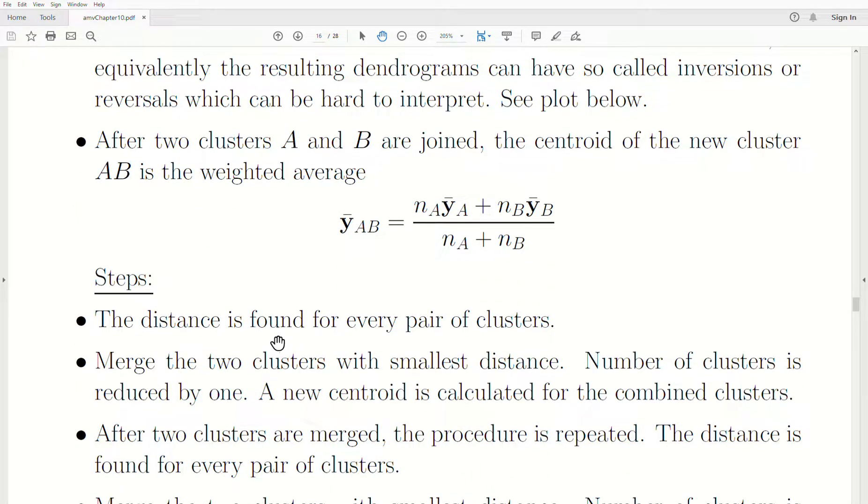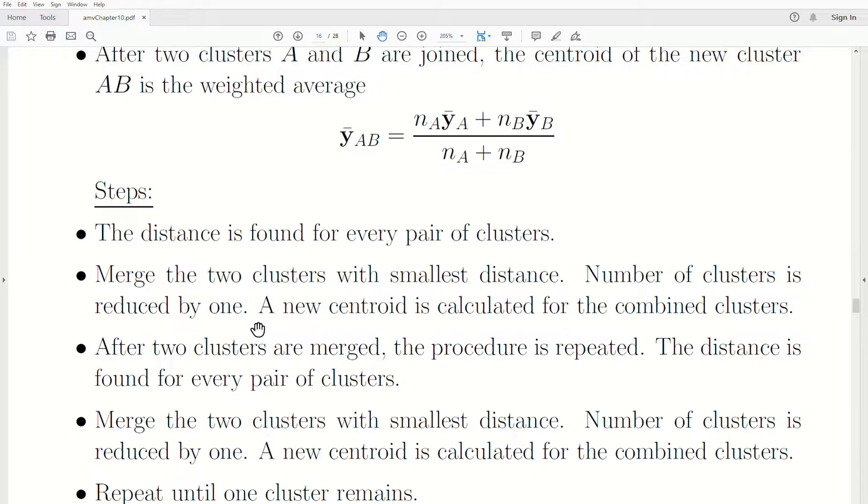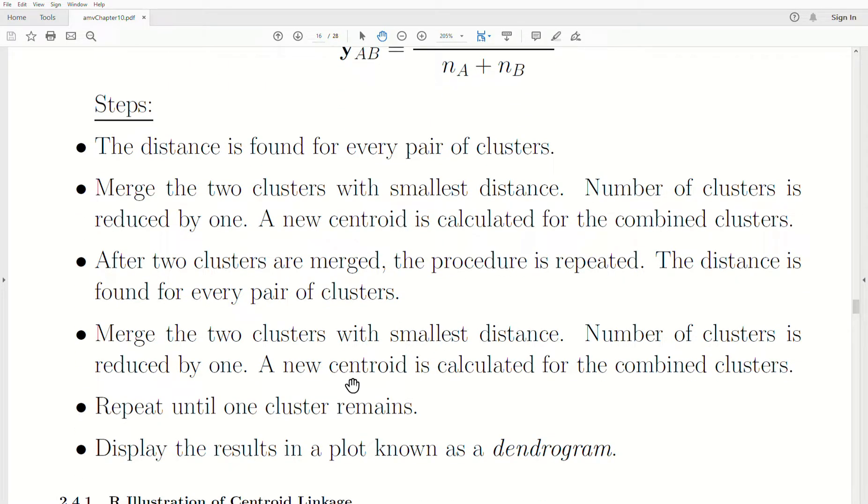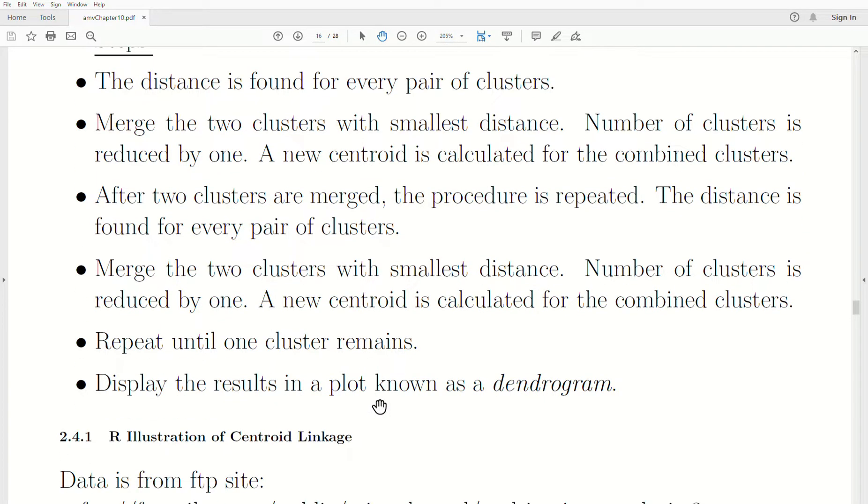Okay, so the steps are this: the distance is found between every pair of clusters. We merge the two clusters with the smallest distance. The number of clusters is reduced by one. A new centroid is calculated for the combined clusters. After the two clusters are merged, the procedure is repeated. This is just repeated until one cluster remains. The results are displayed in a plot known as a dendrogram.